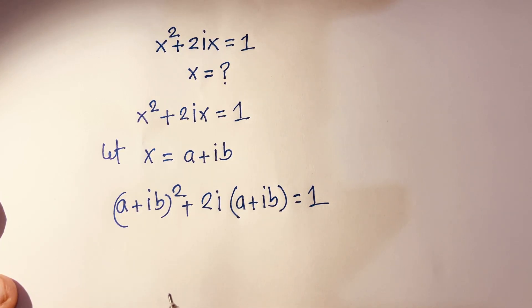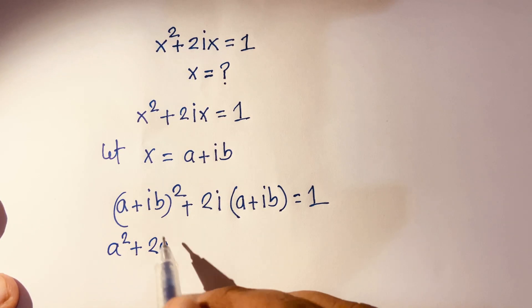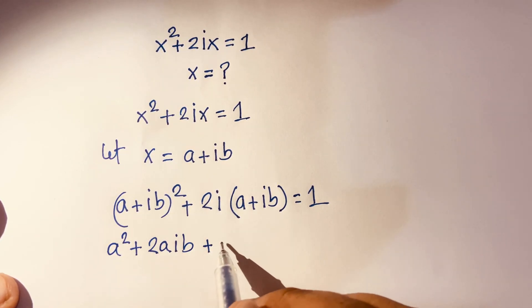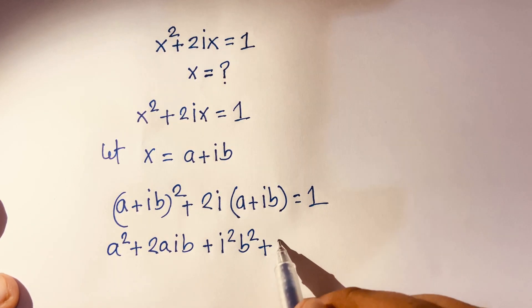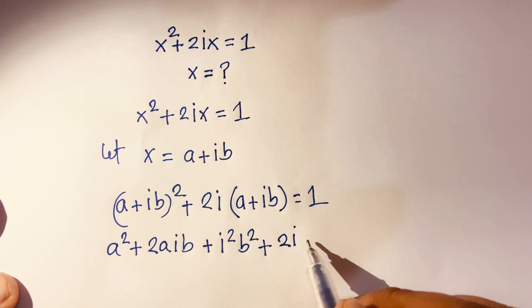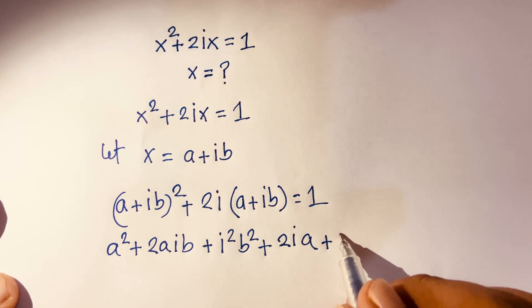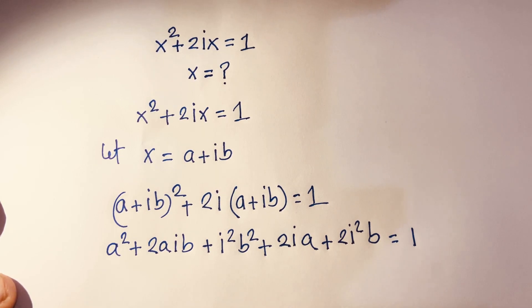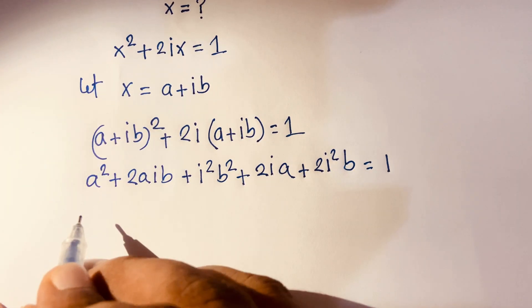Using the identity (a+b)² = a² + 2ab + b², expanding (a + iv)² gives a squared plus 2a(iv) plus (iv) squared, which is a squared plus 2avi plus i squared b squared. The 2i times (a + iv) term gives 2ai plus 2i squared b.